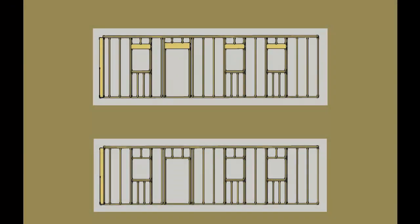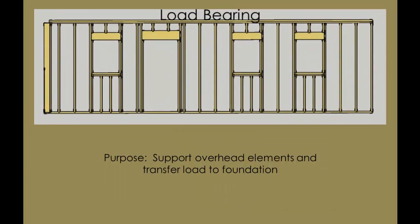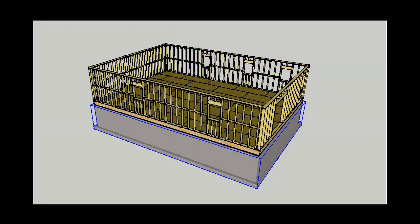In light frame construction, there are two types of walls. While their composition is very similar, fundamentally they are quite different. Load-bearing walls are designed to provide structural support — they carry the load from overhead elements such as another floor level or a roof structure. Looking at this in closer detail, we start with the perimeter support walls.